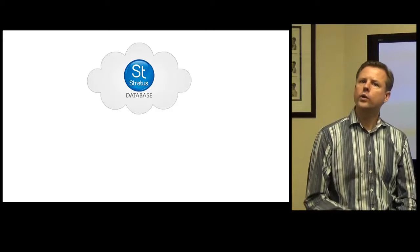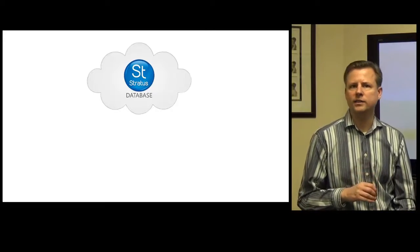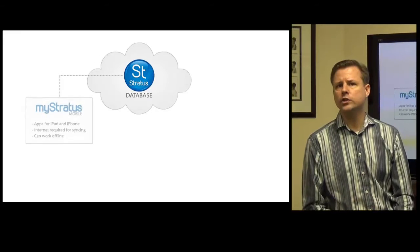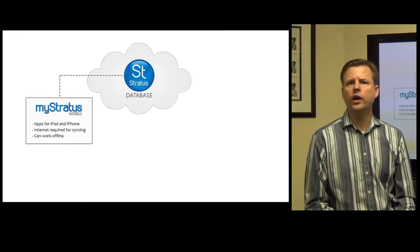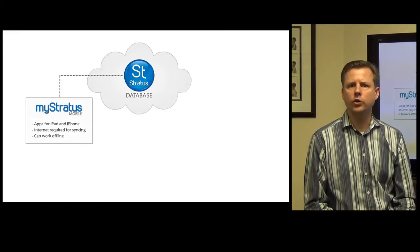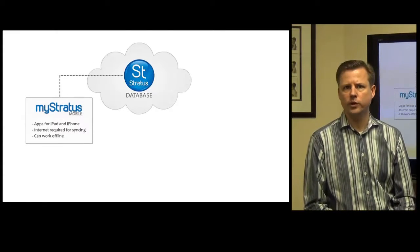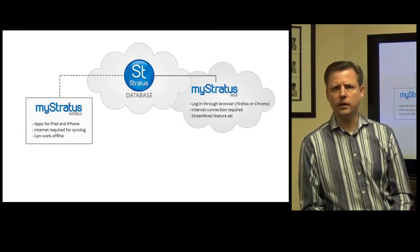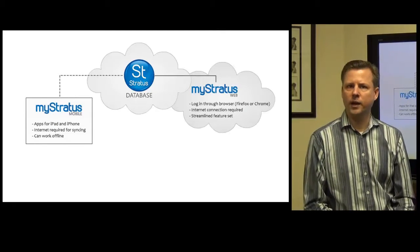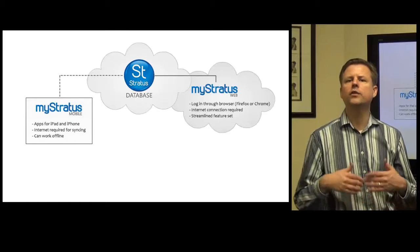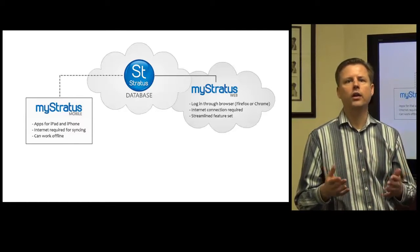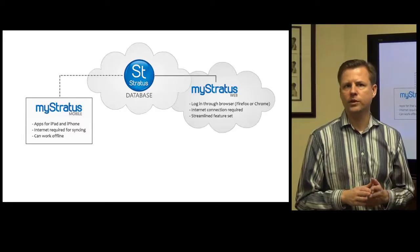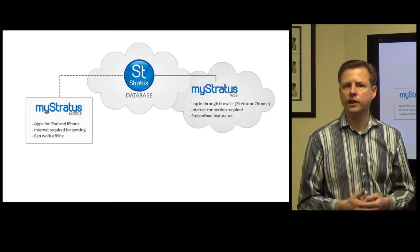Next, we give you three ways that you can access this data. First, you have your Stratus mobile app, where you have all your most critical information available with you 24-7. Second, you can use the Stratus web app to gain even more access to your data from any Mac, PC, or tablet device that has an internet connection.